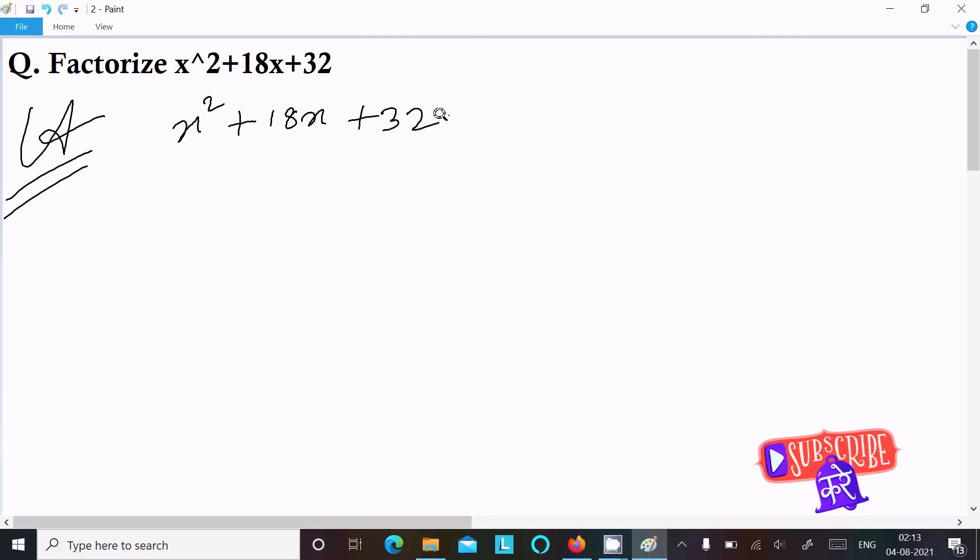First, we need to multiply the first term with the last term. So x squared into 32 equals 32x squared. After that, taking 18x, we can write 18x as 9x plus 9x, so it equals 18x.